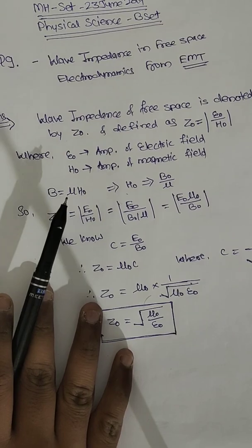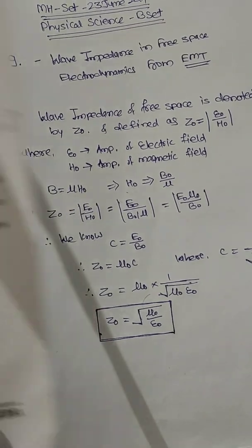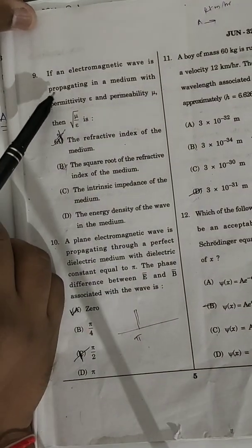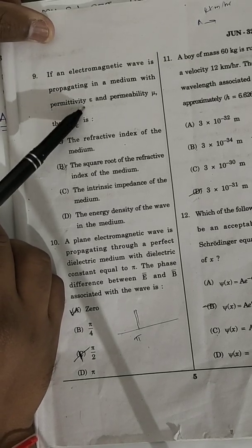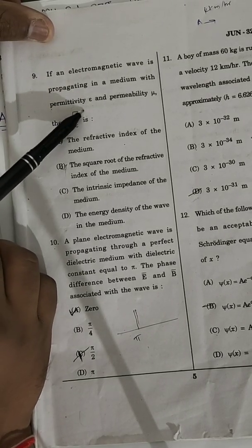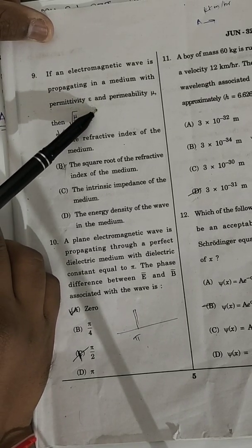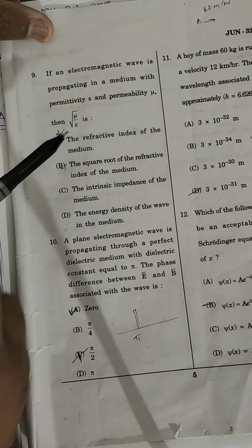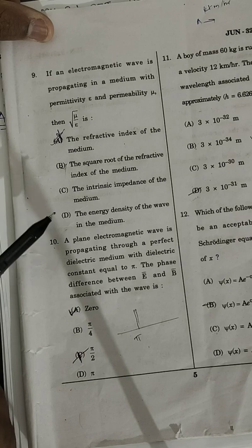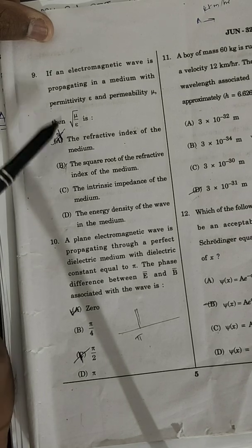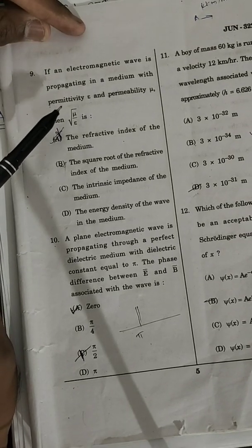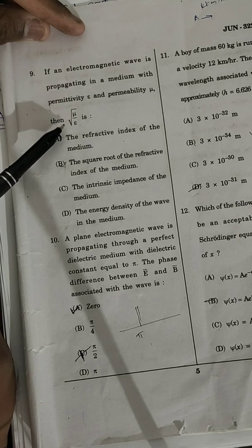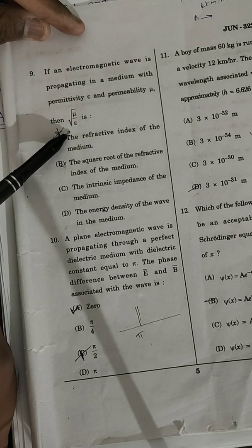Question number 9 says: if an electromagnetic wave is propagating in a medium with permittivity E and permeability mu, then under root mu0 upon E is what? The options are given. When we observe the electromagnetic wave, questions about electrodynamics involve mu0 and E0, permittivity and permeability.